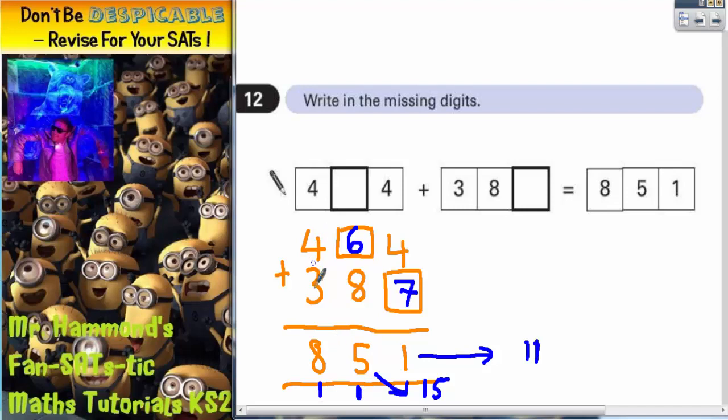And then we'd have four plus three plus one would be eight. So it looks as though the two missing digits are 464 and 387. It would be a good idea at this point just to double check with our own addition column method from scratch to see what we would get.